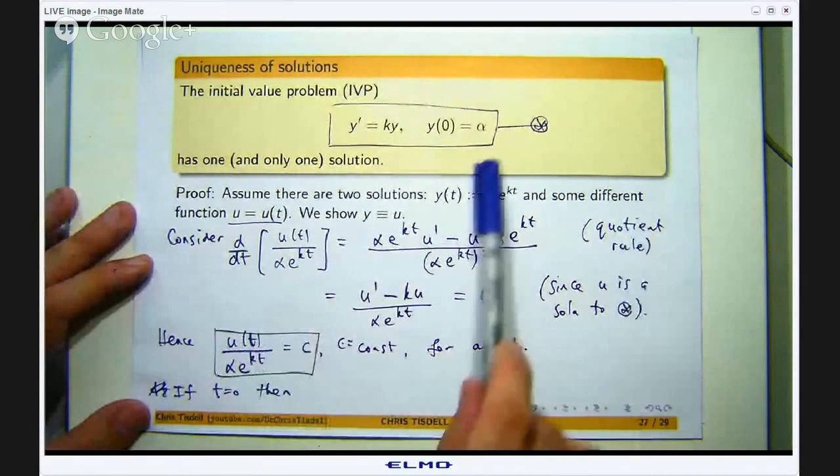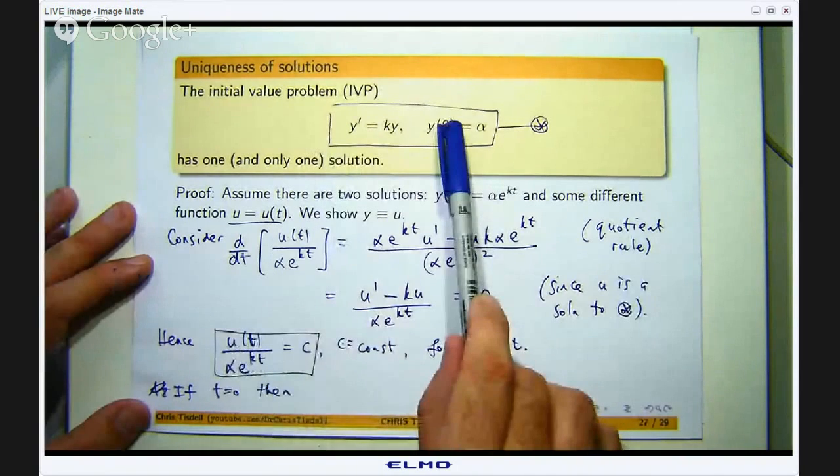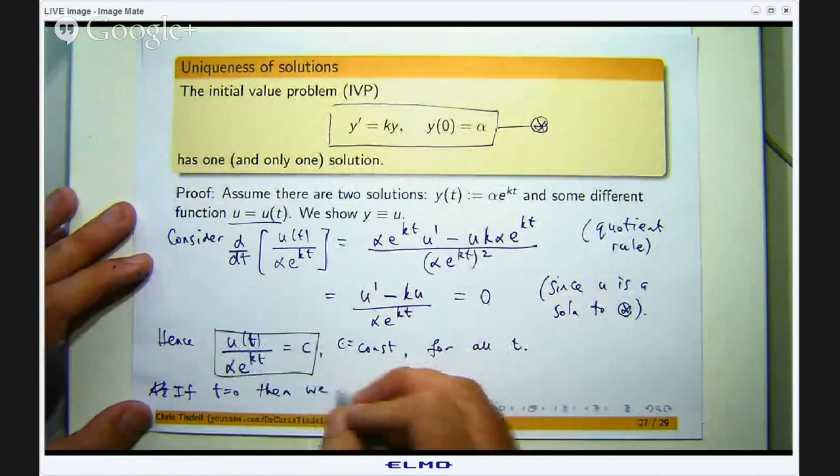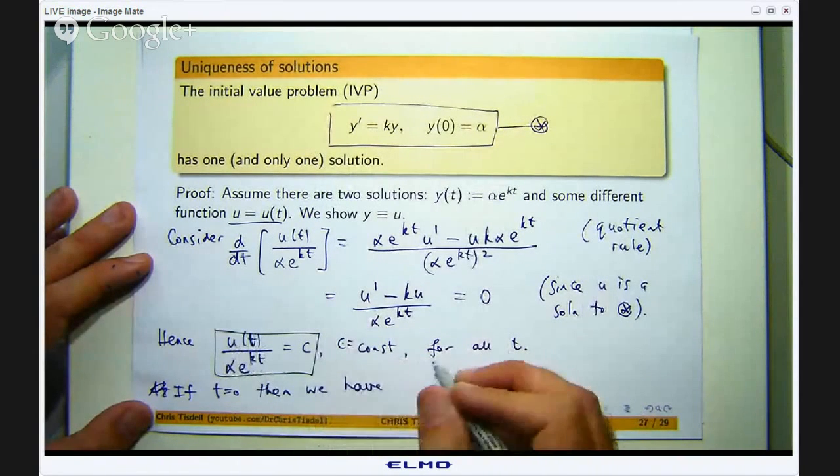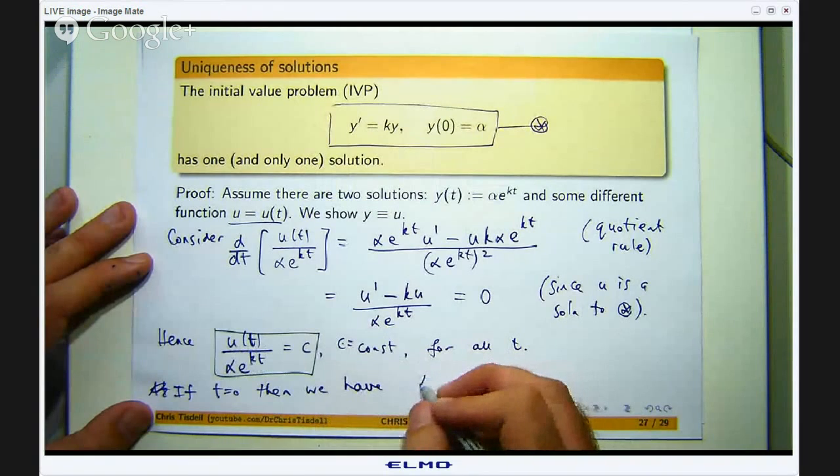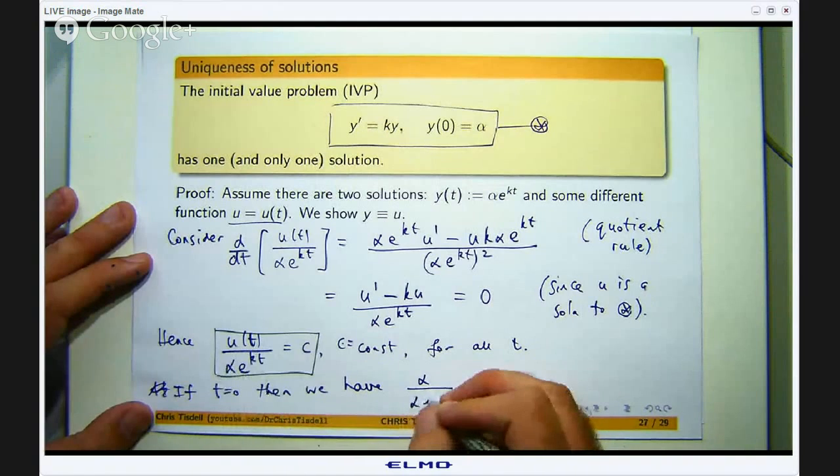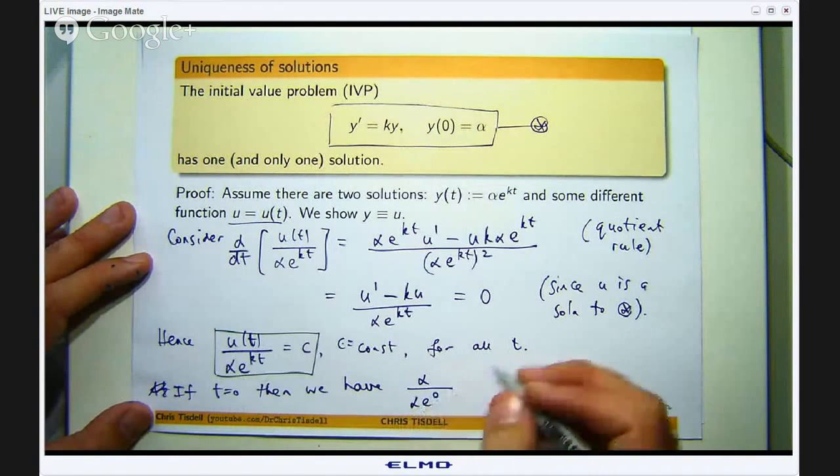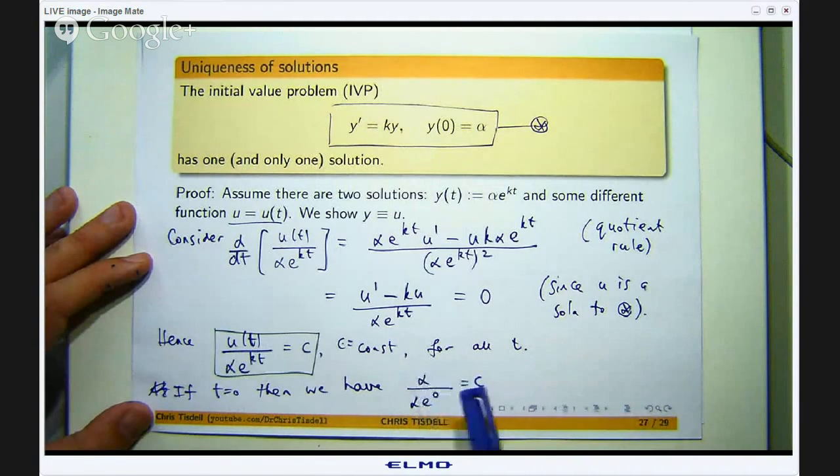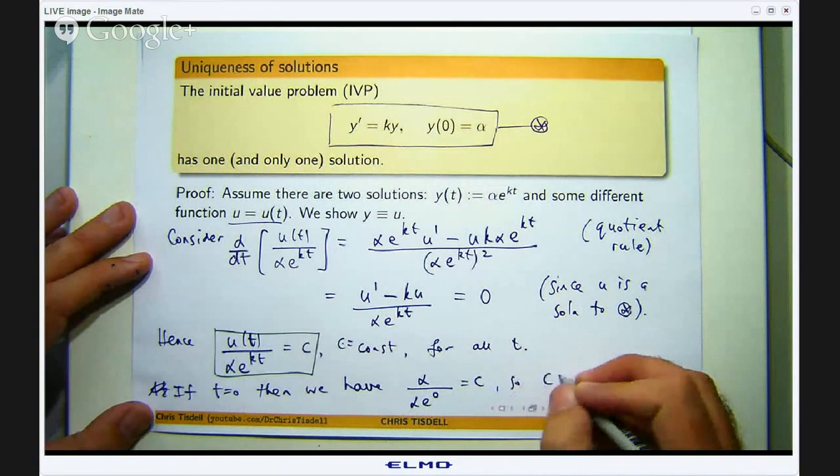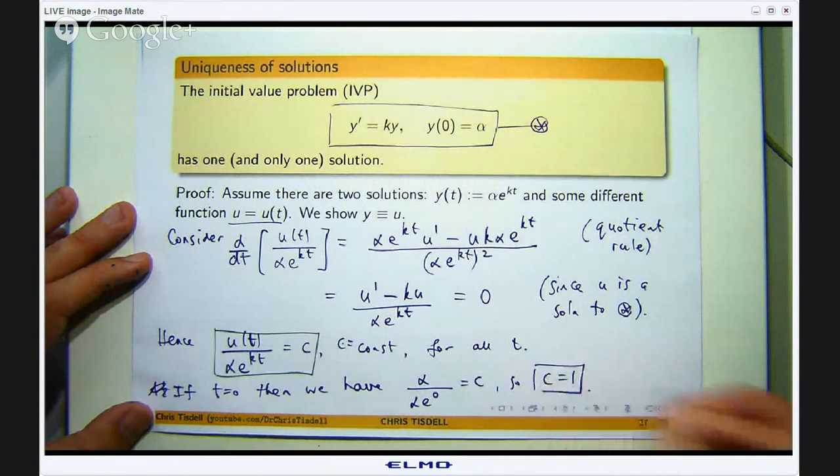Well, because u is a solution to this problem, u will be α, and I will just plug in t equals 0. Here I will get αe^0 which is 1. So I will get the α cancel and I will get c equals 1.